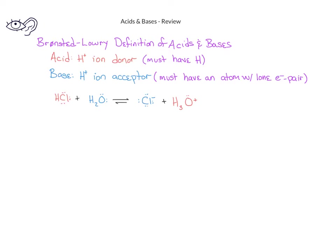In this acid-base equilibrium equation, we see that we have hydrogen chloride or hydrochloric acid reacting with water to produce the chloride ion and the hydronium ion. Moving from left to right, the reactants are hydrochloric acid and water. When we compare the reactants to the products, we see that the hydrochloric acid loses a hydrogen ion, so the hydrochloric acid is donating a hydrogen ion and must be acting as an acid.